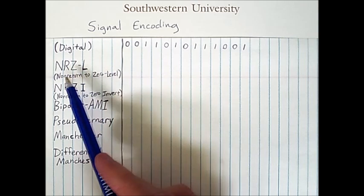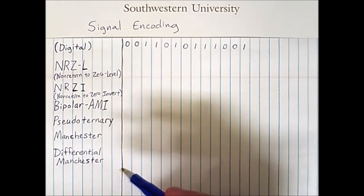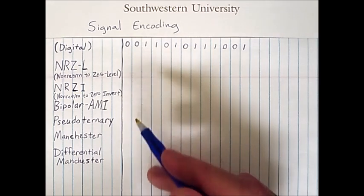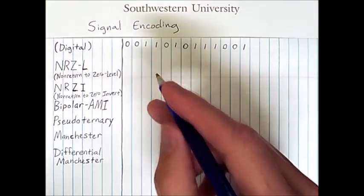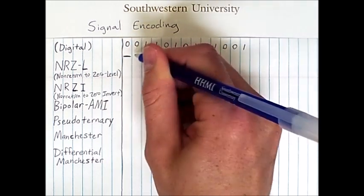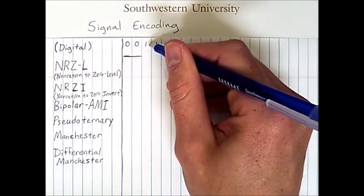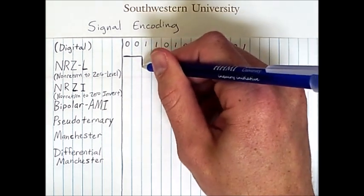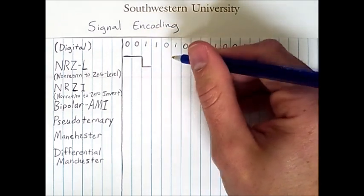The first method I'll be discussing is non-return to zero level. This method is pretty straightforward — it's more or less what you'd expect for encoding bits. We have one voltage level corresponding to zero and another voltage level corresponding to one. We'll be using a positive voltage level to correspond to a zero, so we continue at that positive voltage, but when we encounter the one the voltage level drops down. Because we're using digital encoding methods, we have very sharp angular waves, and a lower voltage level represents the one.